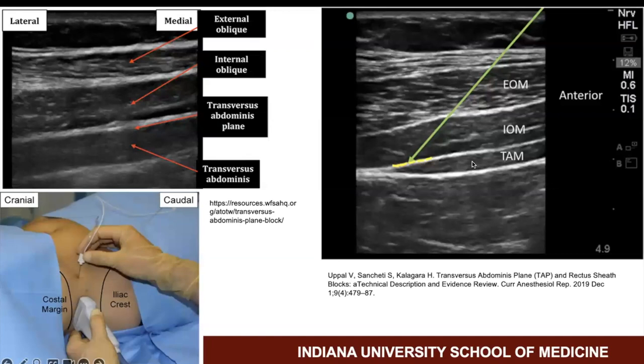Continue to advance laterally until the transversus abdominis muscle can be seen tapering off. This yellow line right here is the site of where our anesthetic will be injected. A short bevel block needle should be used.